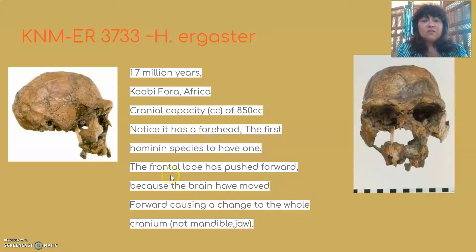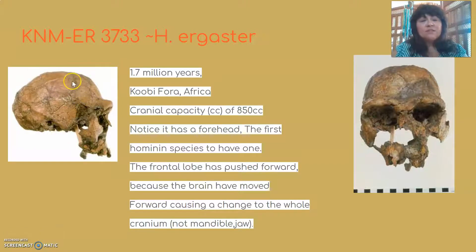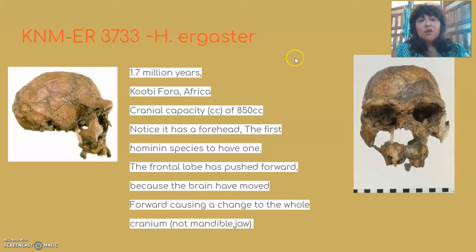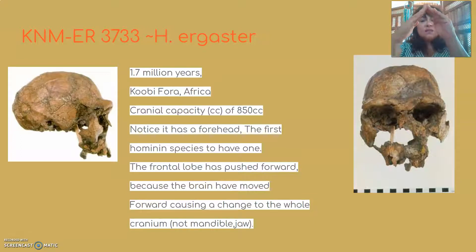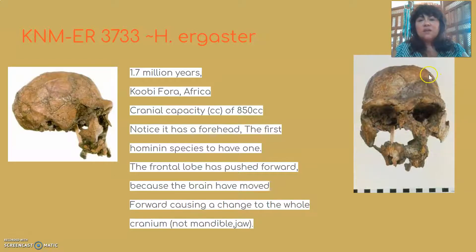KNM-ER 3733 is the first hominid to show a forehead. The brain didn't just get bigger — it changed position. In earlier species, the brain case was at the back with the face in front, separated by a tight post-orbital constriction behind the eyes. In ergaster, the brain is bigger and pushing forward, creating an expansion of the parietals — moving outward like this, which is the rounded shape we still have today.